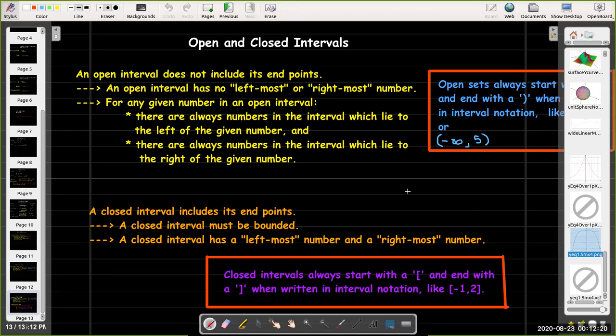A closed interval does include its endpoints. Again, since infinity or negative infinity, those are not numbers, can never be included in the interval. That says that if you have a closed set, it must be bounded. The closed interval will have a leftmost number, the left endpoint. It will have a rightmost number, the right endpoint.